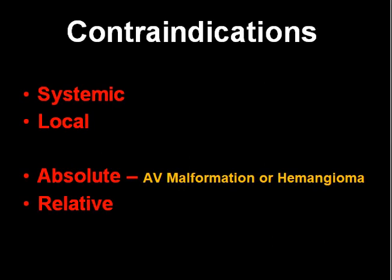There is also absolute contraindication and relative contraindication. Absolute contraindication means you cannot extract the tooth under any condition before management of the underlying condition. In case of relative contraindication, depending on the risk and benefit, we can plan extraction in the same visit or at the next visit. There is only one absolute contraindication of tooth extraction, which is AV malformation or hemangioma.